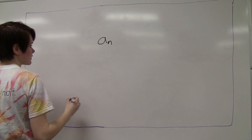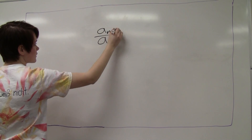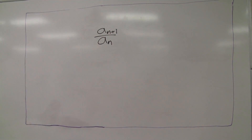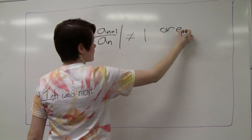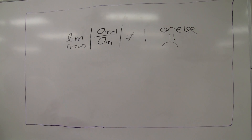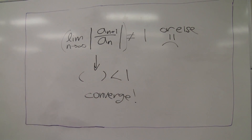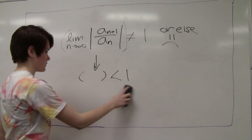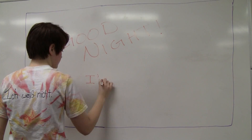Consider your function a_n, now a_{n+1}. Compare this over a_n and take the absolute value. Simplify, have fun — you will converge if the number you find is less than 1. Otherwise you diverge. Goodnight, I think I'm done.